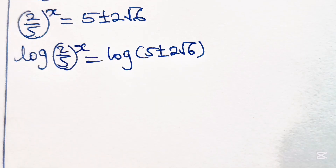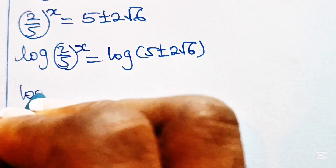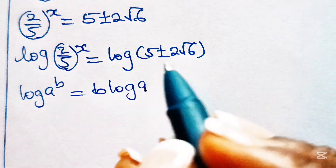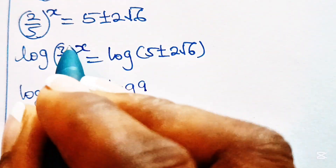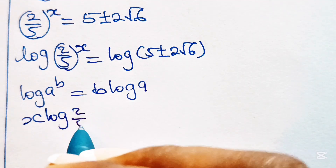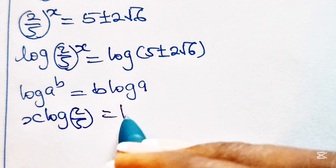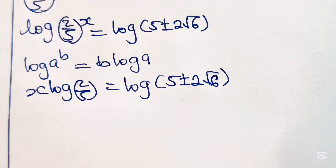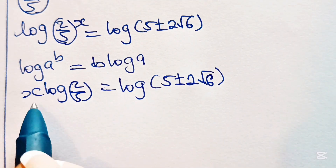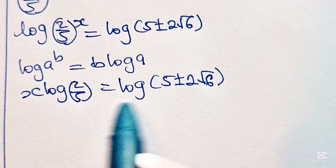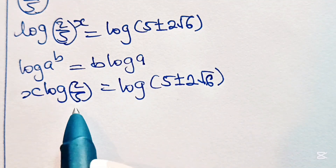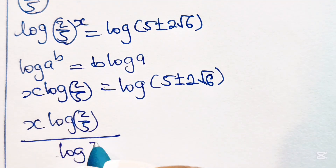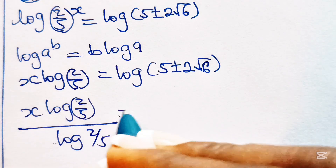Now, where you have log a raised to the power of b, this is equal to b multiplied by log a. That means we can write this as x multiplied by log 2 over 5, equals log of 5 plus or minus 2 root 6. To get the value of x, we divide both sides by log 2 over 5: x times log 2 over 5 divided by log 2 over 5, equals log of 5 plus or minus 2 root 6, divided by log 2 over 5.